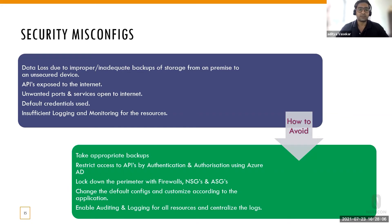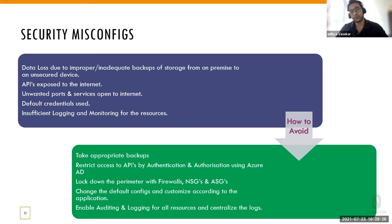Security misconfiguration is like an endless topic, but let me list some of the major ones. Data loss due to improper or inadequate backups of storage from on-premise to an unsecured device — shifting data from on-premise to cloud is a huge headache if you have sensitive data. Then there's APIs exposed to the internet, unwanted ports and services open to the internet, default credentials used, and insufficient logging and monitoring for resources.